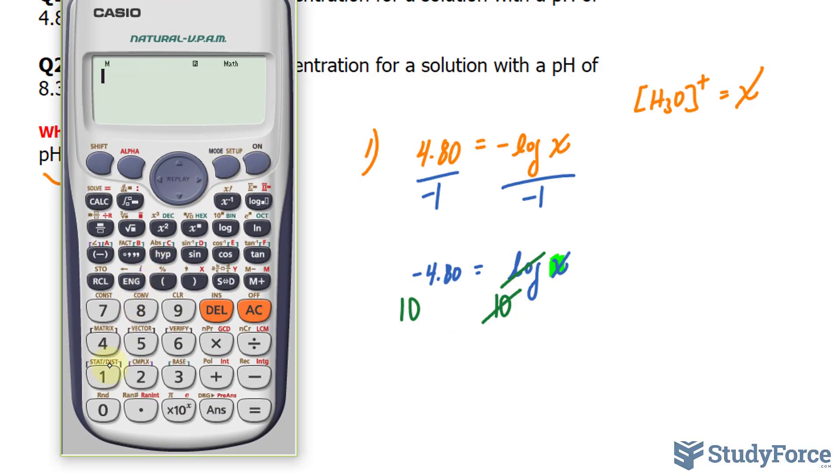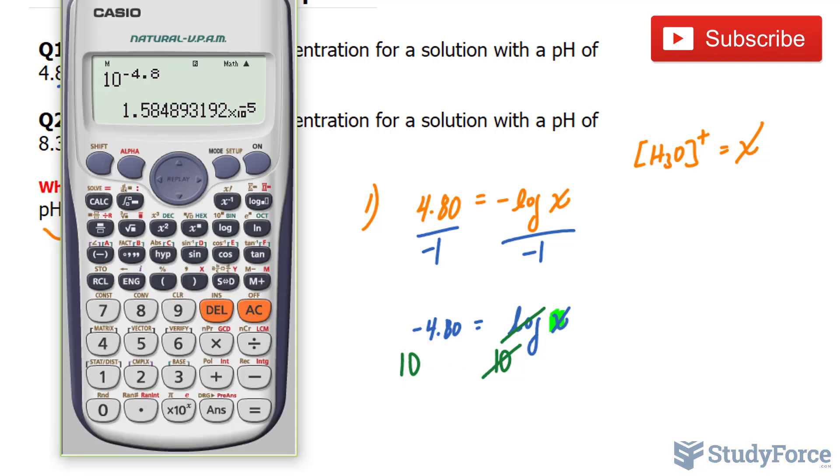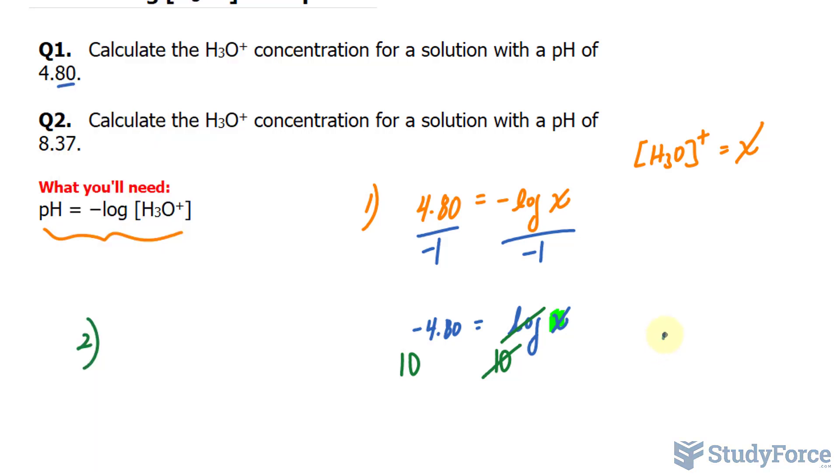Let's go ahead and find out what that is equal to. 10 raised to the power of negative 4.8, and this gives us 1.58 times 10 to the power of negative 5. Now, to take into account significant figures, since 4.80 had two numbers after the decimal place, this means that our final answer needs to be to two significant figures. So we'll round this to 1.6 times 10 raised to the power of negative 5 molar. That right there is the concentration of H3O+ at a pH of 4.80.